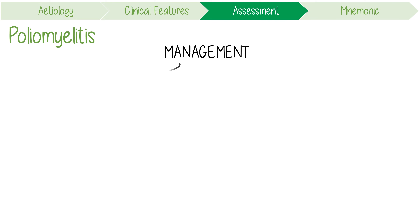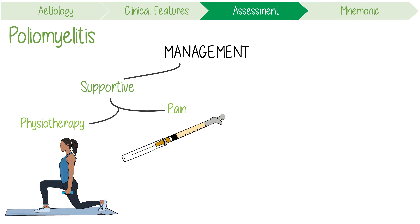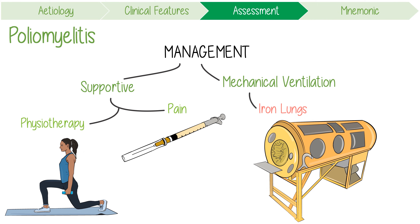The management of poliomyelitis is supportive, including pain management and physical therapy. Historically, if respiratory failure developed requiring mechanical ventilation, iron lungs were used. These are mechanical respirators which enclose most of a person's body and vary the air pressure in the enclosed space to stimulate breathing, prior to modern positive pressure ventilators.